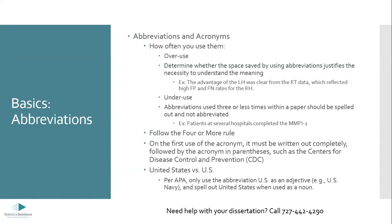On the first use, write it out completely, followed by the acronym in parentheses — for example, the Centers for Disease Control and Prevention (CDC), which is the commonly accepted acronym for this U.S. governmental organization. Same thing with United States versus U.S. Per APA style guides, only use the abbreviation U.S. as an adjective — U.S. Navy, U.S. foreign policy — but when used as a noun, spell out the United States.